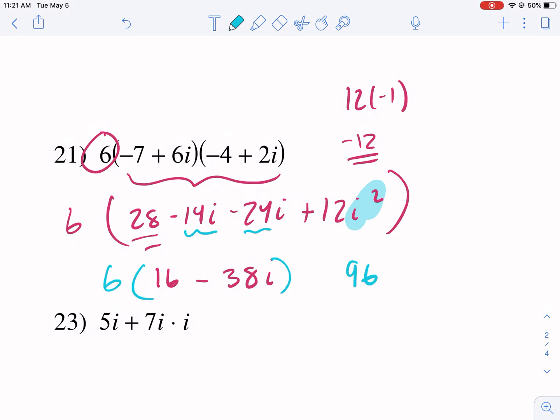38 times 6 gives us 228. 228, and that's -16. I'm just going to double check my answer times 6. 96. Okay, don't forget your i, and then there's our final answer.